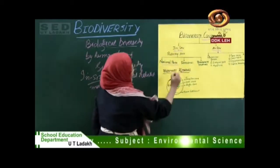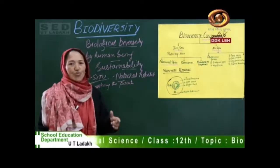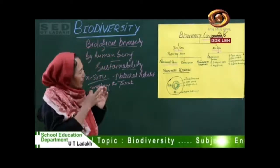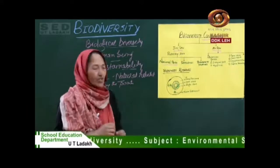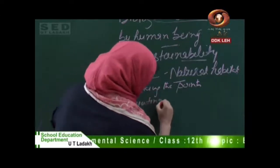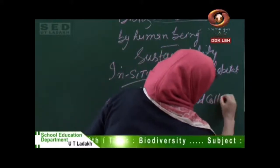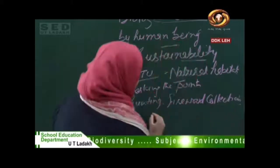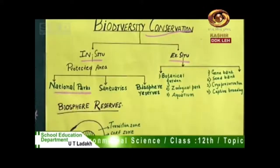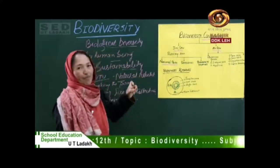Under in-situ conservation, the first type is the national park. A national park is designated by the government to protect particular animals and plants so they can be conserved for the future. In a national park, hunting, firewood collection, and construction are not allowed.